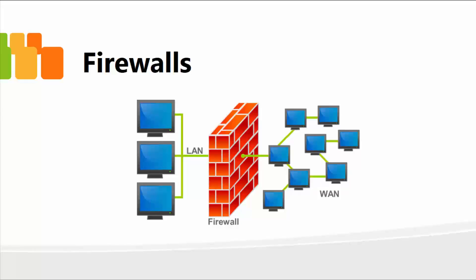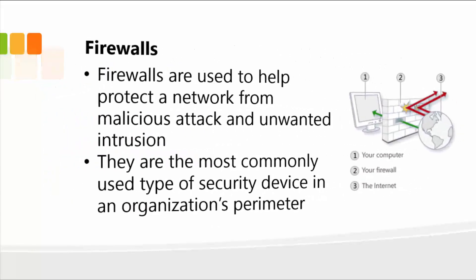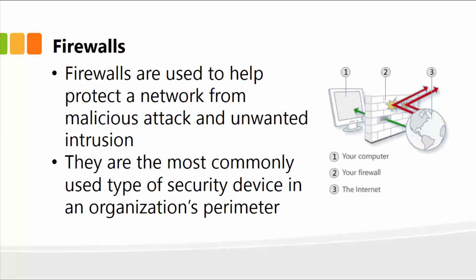Welcome back. In this lesson, I'm going to talk about firewalls and also demonstrate so you can actually see firewalls in action. Once you've understood network intrusion and want to secure your local area network, wide area network, or network in general, you need to deploy and implement a firewall, which basically secures your network. Firewalls are typically used to help protect the network from malicious attack and unwanted intrusion, and they're very common — almost every network today has some kind of firewall. It is just a barrier between your computer and the internet or external threats.